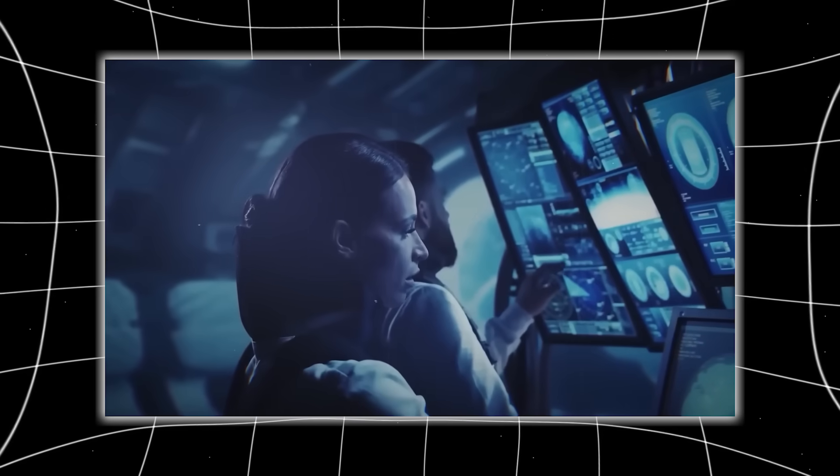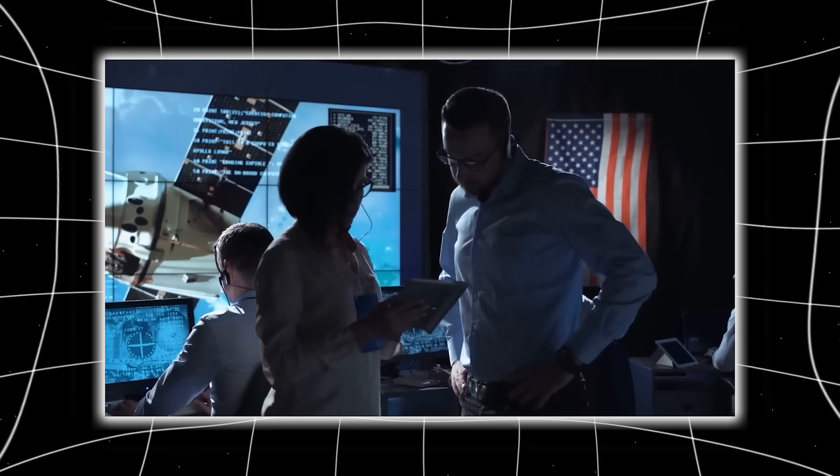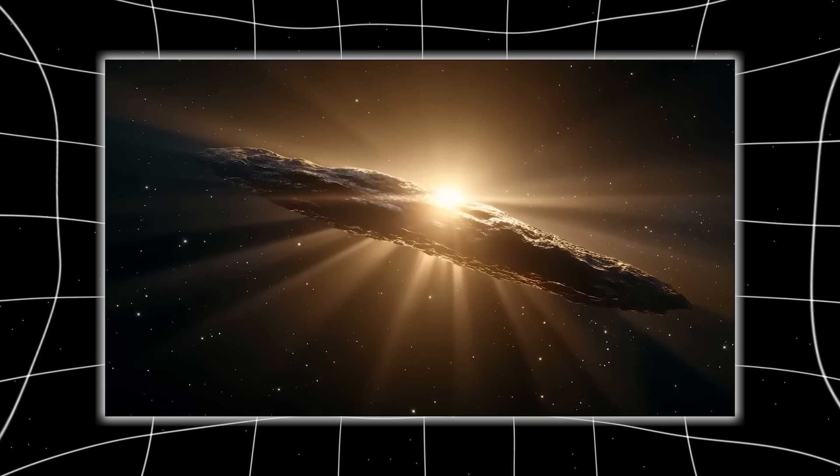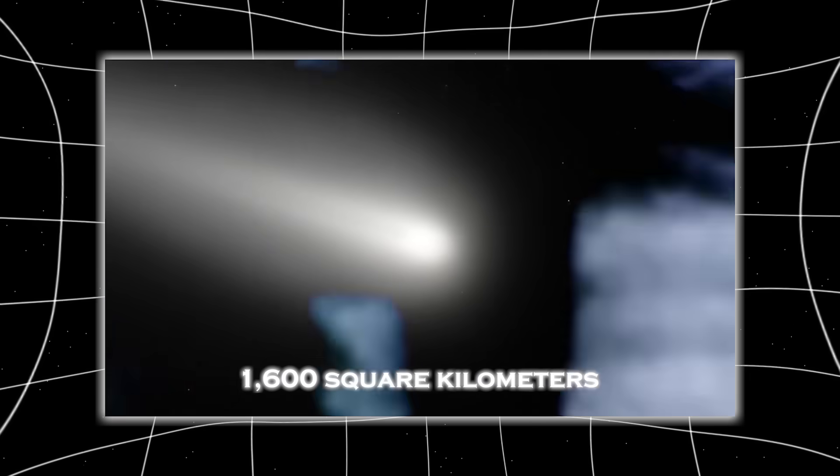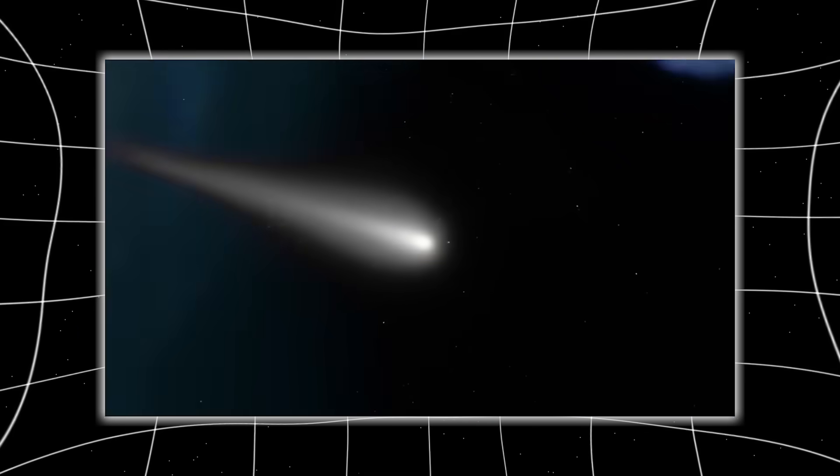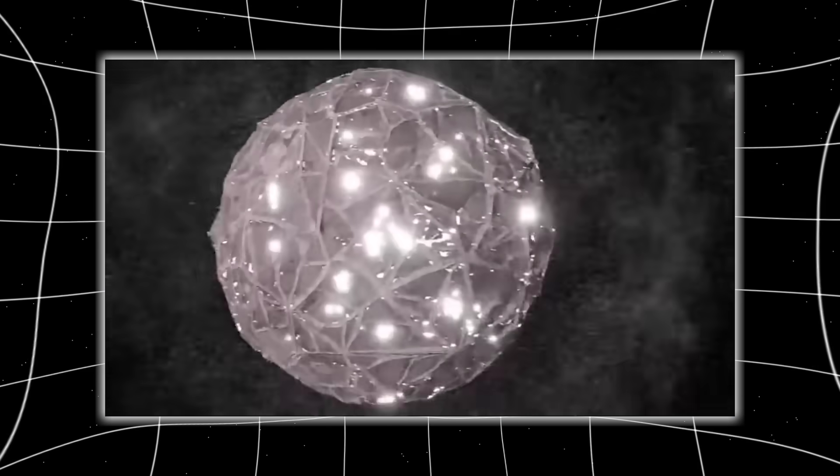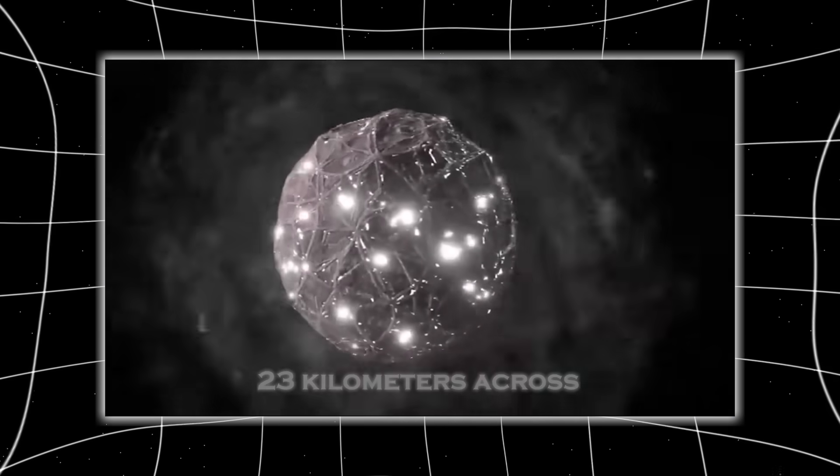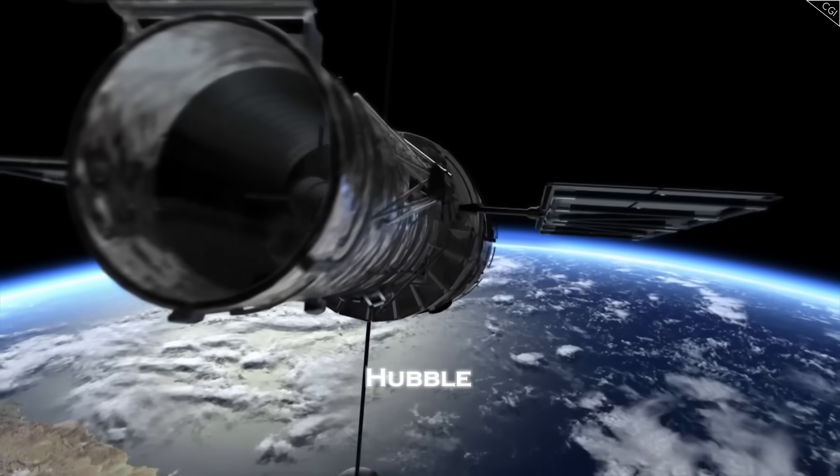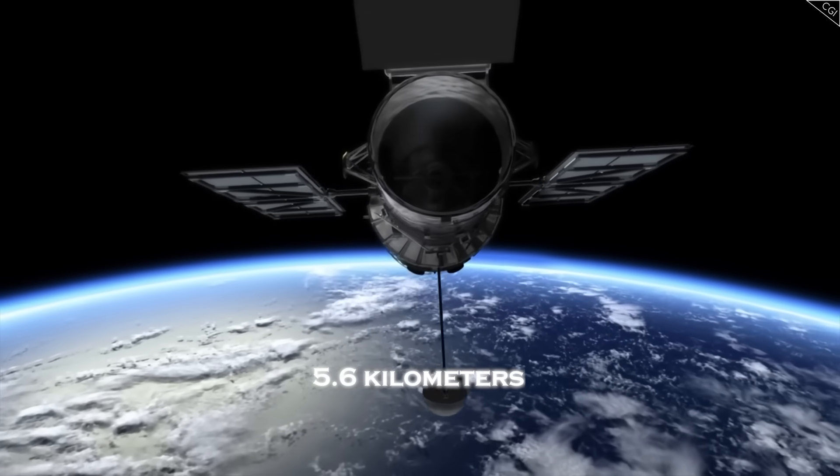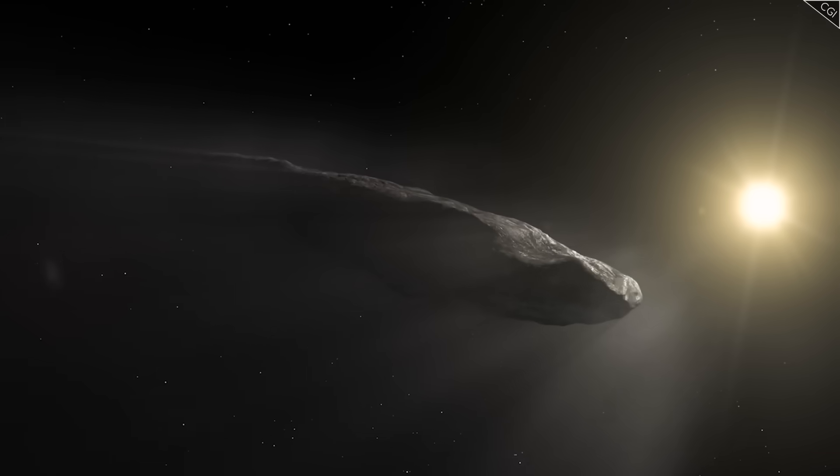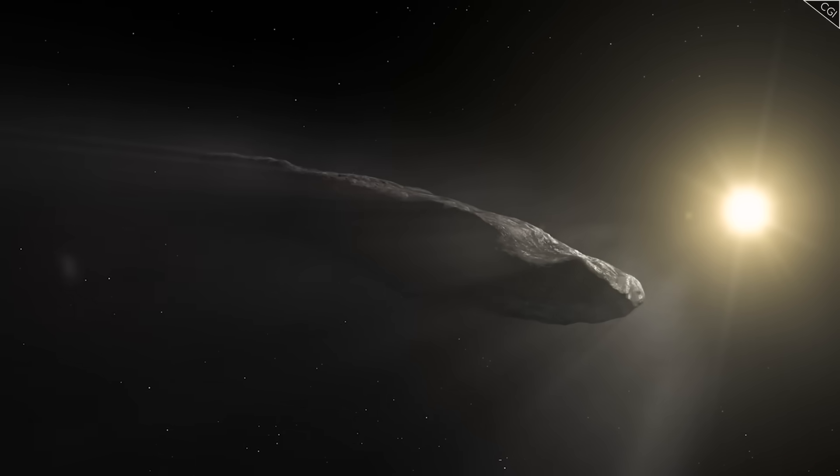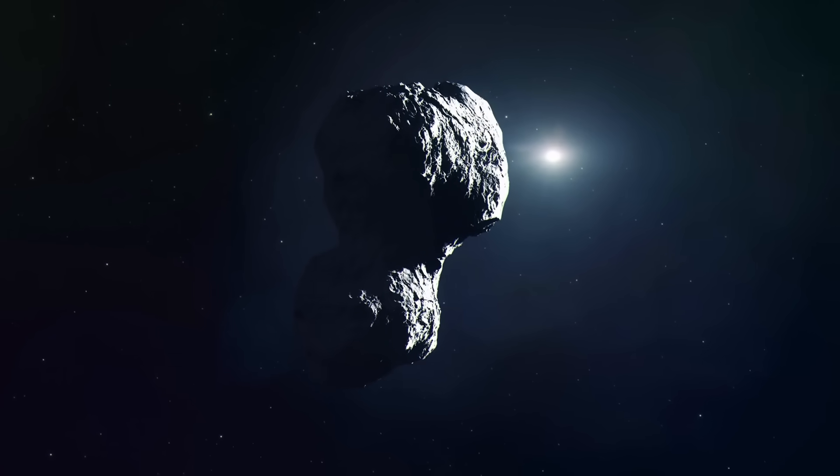And when scientists ran the numbers, the explanation became even more alarming. To sustain tails that enormous, 3i Atlas would need 1,600 square kilometers of sunlit surface area. Basically, a spherical comet 23 kilometers across. But Hubble had measured the nucleus at only 5.6 kilometers across, four times too small. Which means the tails we were seeing required a comet vastly larger than the one we actually have. And that contradiction broke the model in half.